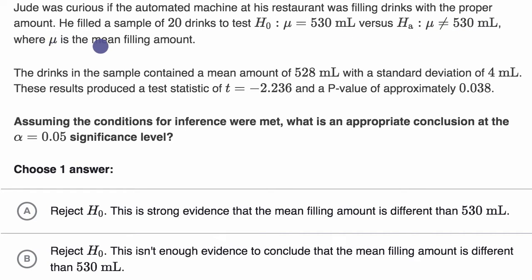Where mu is the mean filling amount. The drinks in the sample contained a mean amount of 528 milliliters with a standard deviation of 4 milliliters. These results produced a test statistic of t equals negative 2.236 and a p-value of approximately 0.038.